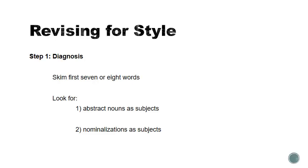Let's go through the process of actually revising a sentence — looking for these kinds of problems and seeing how we can fix them. Step one, just as with revising sentences to highlight the actions, is to skim the first seven or eight words. What you're looking for are abstract nouns as subjects — sometimes that's appropriate, but a lot of times it's not — and especially nominalizations as subjects. Nominalizations are forms of abstract nouns, concepts rather than physical things. So if you see these as the subject of the sentence, that's perhaps a red flag that you need to do some revising.